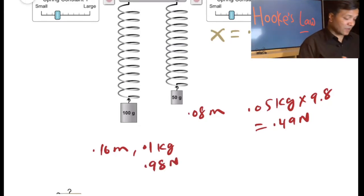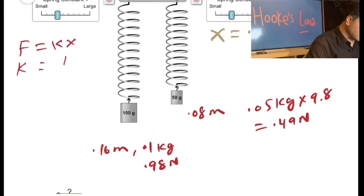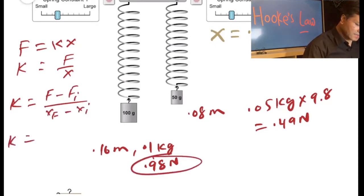So what are we going to do with this? We're going to use Hooke's Law. What does Hooke's Law tell us? F equals kx. That means k equals F over x, or F final minus F initial over x final minus x initial.